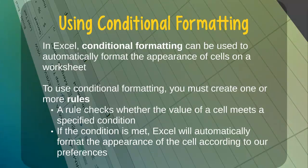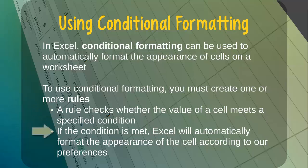In Excel, conditional formatting can be used to automatically format the appearance of cells on a worksheet. To use conditional formatting, we must create one or more rules. A rule checks whether the value of a cell meets a specified condition. If the condition is met, Excel will automatically format the appearance of the cell according to our preferences.